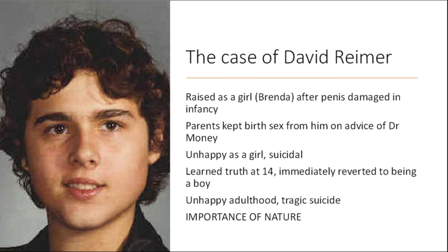A very different but equally tragic case is that of David Reimer. David was raised as a girl because, in a freak hospital accident, his penis was damaged in infancy. His parents, guided by radical sex therapist Dr John Money, decided to keep his true birth sex from him and raise him as a girl named Brenda. Brenda was very unhappy and by her teenage years was suicidal. When her parents told her the truth at age 14, she immediately reverted to being a boy, taking the name David. David Reimer had an unhappy adulthood and tragically committed suicide in his late 30s. His case seems to speak about the importance of nature — that there are certain things about being a biological boy that can't be overwritten by raising someone as a girl.